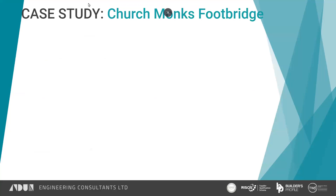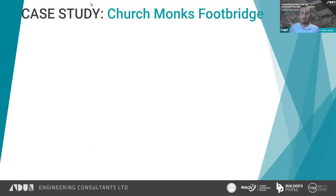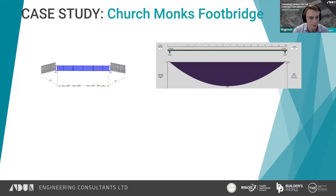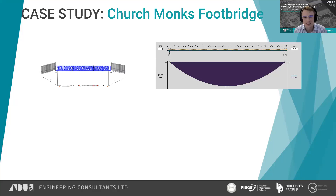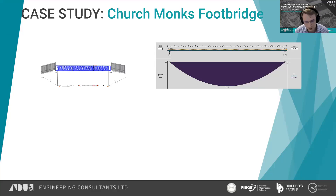Moving on to the second case study: Churchmans Footbridge, part of Wessex Footbridges. Working for Sam Evans and Sons with Balfour Beatty as principal contractor, the scope involved demolition sequencing, track protection, and analysis of the bridge in temporary condition. This is a good example of the reversal of load paths in the temporary condition. Load path reversals are of great importance when dealing with temporary works - even actions as simple as lifting out an existing bridge must be given some thought.